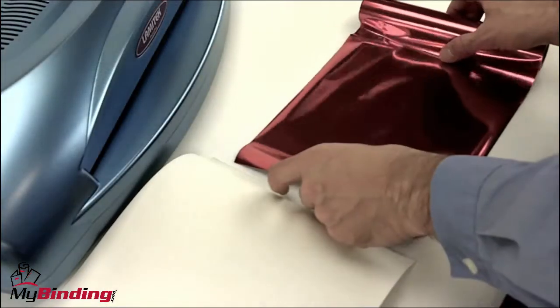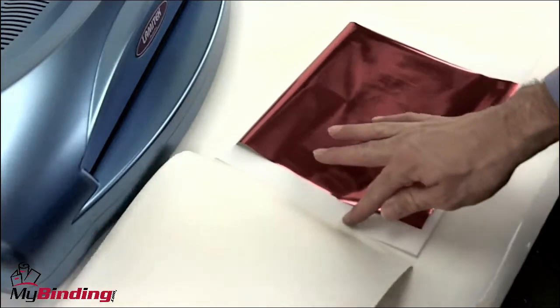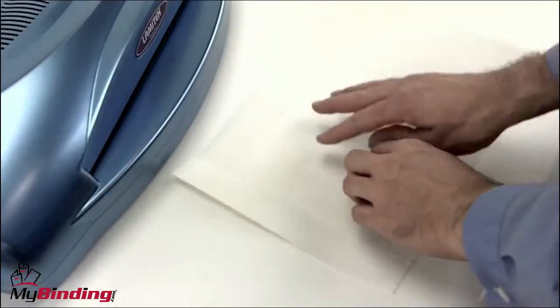The first step is to cut foil pieces that will cover your design completely. With the color side of the foil facing up away from the design, place the whole thing into a laminating carrier.